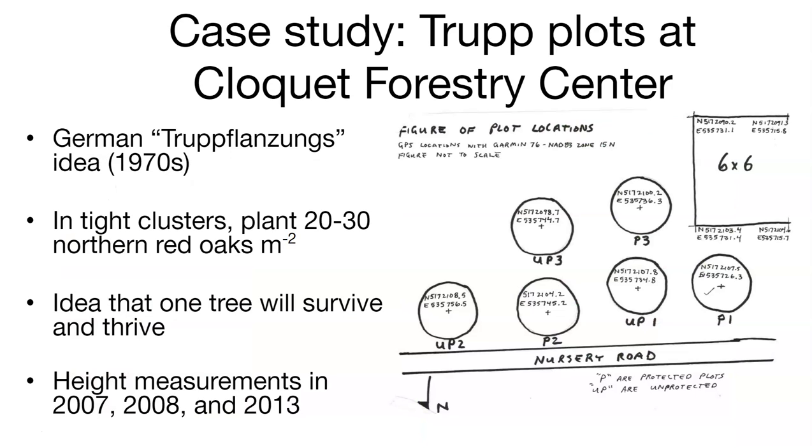And so to do this, a study was initiated. We call these the trupp plots. And so this was a German idea, this truppflanzens, any of you that may know German. The idea here is to plant trees in tight clusters. And so in this case, we're planting 20 to 30 trees within a 1 meter square space to see if they might be able to survive. And the idea is that if you plant so many in a tight cluster, very, very dense, one of those trees might survive and thrive. Maybe the other ones might be browsed. And so it's kind of trying to use an approach where you plant a lot and hope that you get at least one of them to survive.